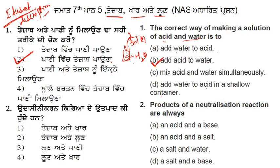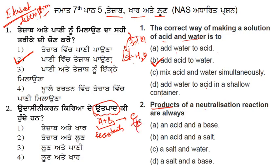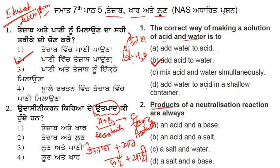The second question is about the products of neutralization reactions. Whenever there is a reaction A plus B, a product C is formed. The reactants produce products. The neutralization reaction produces salt and water.